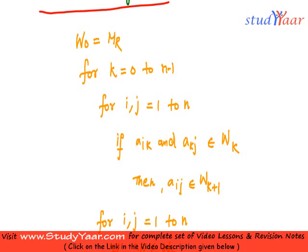We start off by creating W0, which is the same as the matrix representation of the relation R. Then what we do is we individually create W1, W2, and so on up till Wn is created.